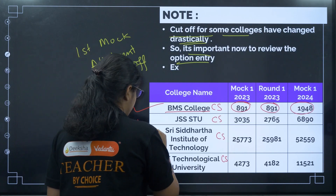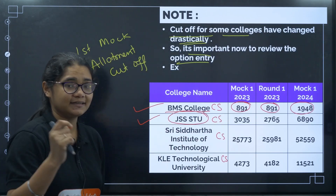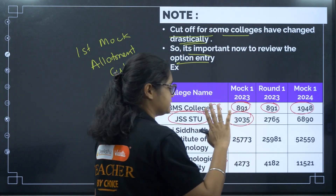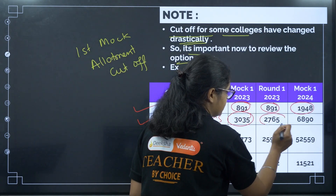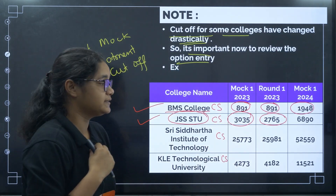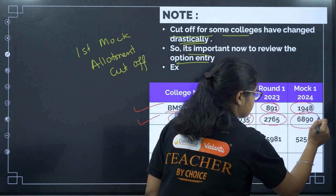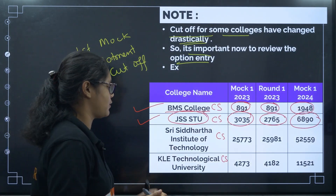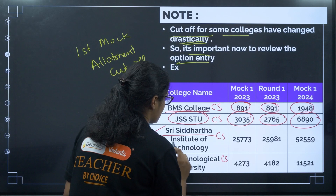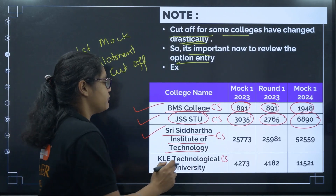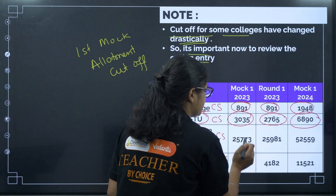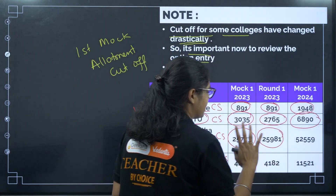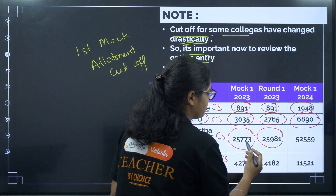The second college is JSS Science and Technological University. For mock 1 2023, the cutoff was 3,035 and round 1 2023 was 2,765. But for mock 1 2024, it is 6,890 — again a drastic decrease. Next, Siddhartha Institute of Technology in Tumkur: for computer science, mock 1 2023 was 25,773 and round 1 2023 was 25,981, not much difference.